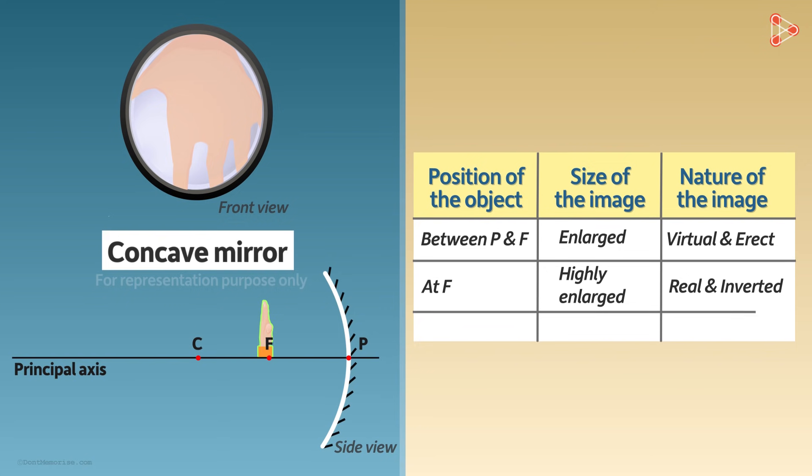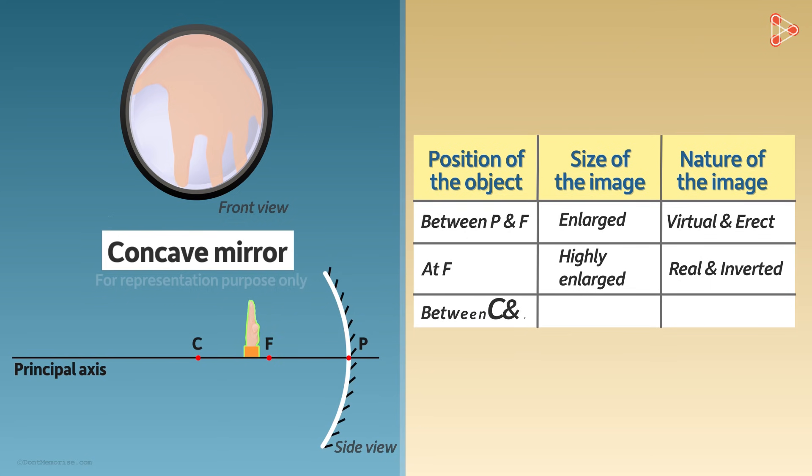When I start moving this object away from the focal point towards point C, the image is still enlarged, but the size is reducing. What is the nature of this image? Yes, here as well, the image is upside down. It's a real image.